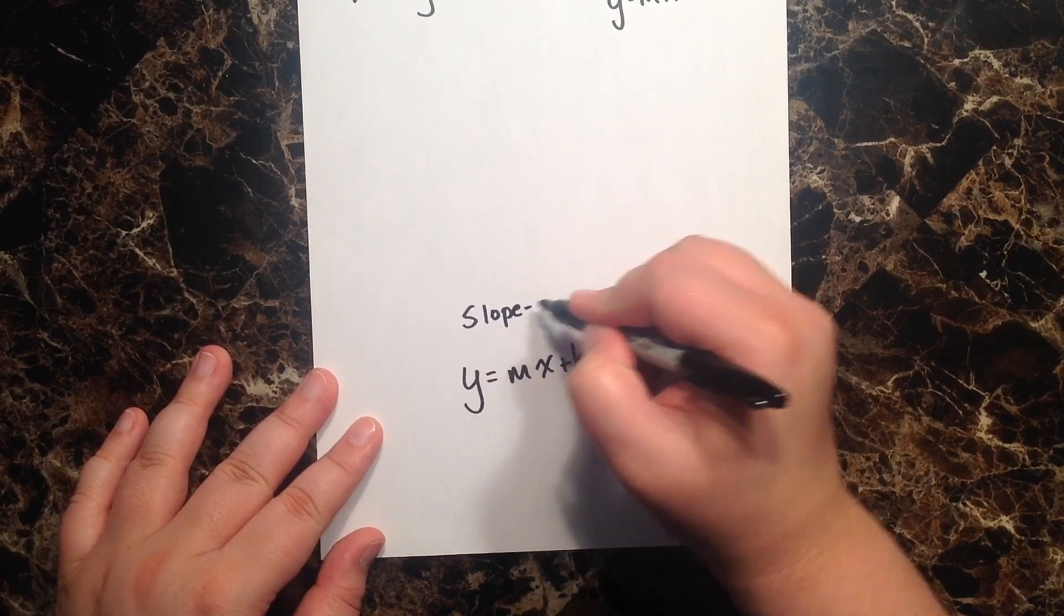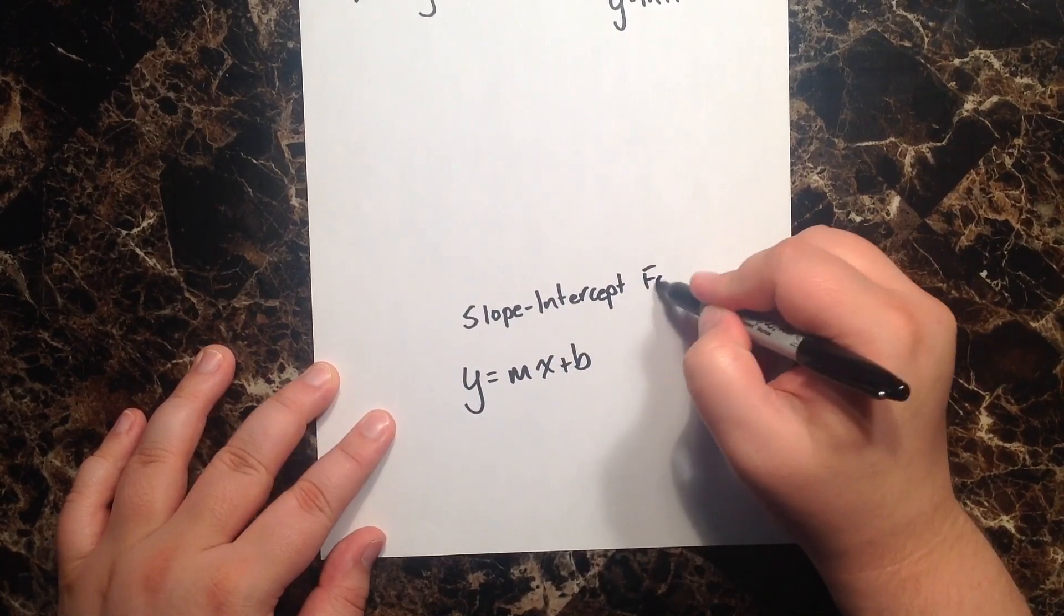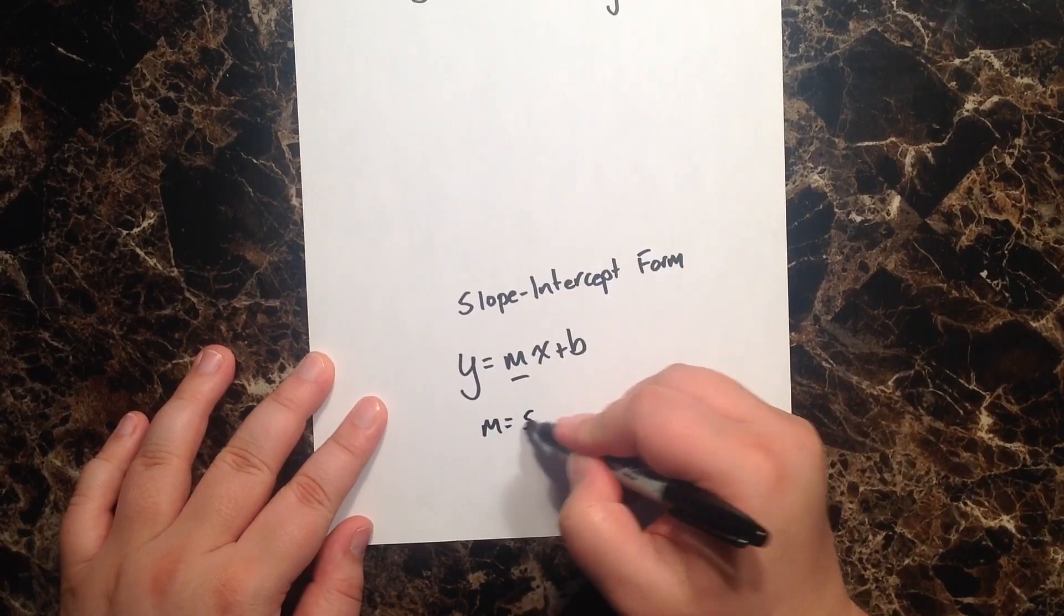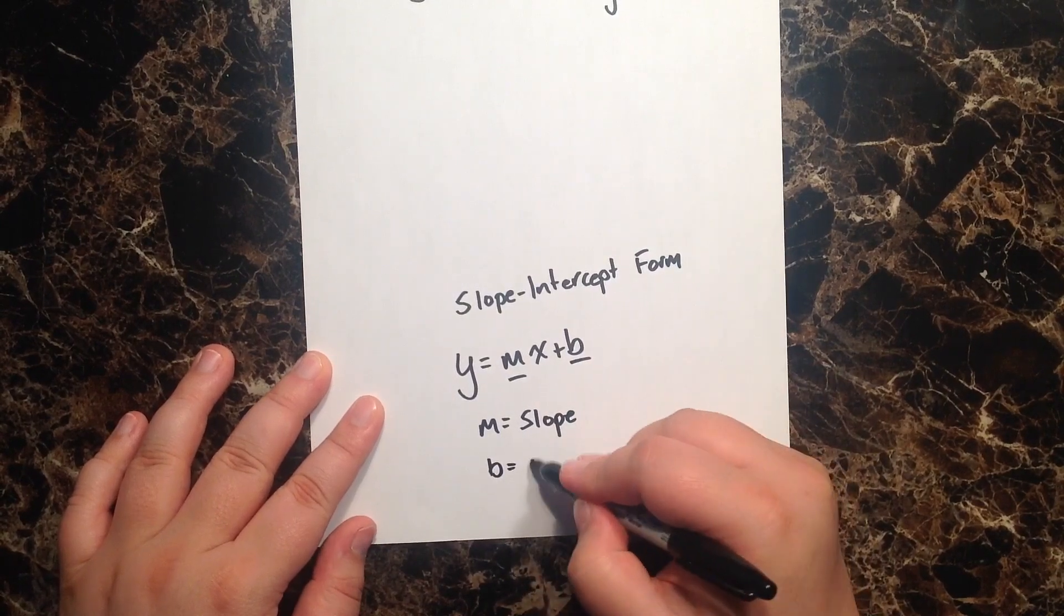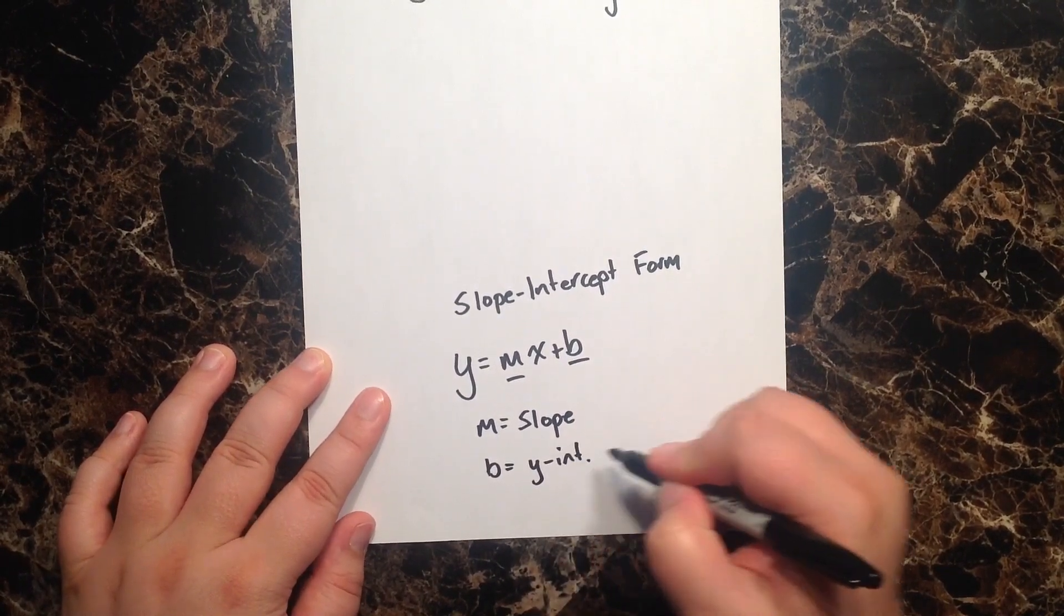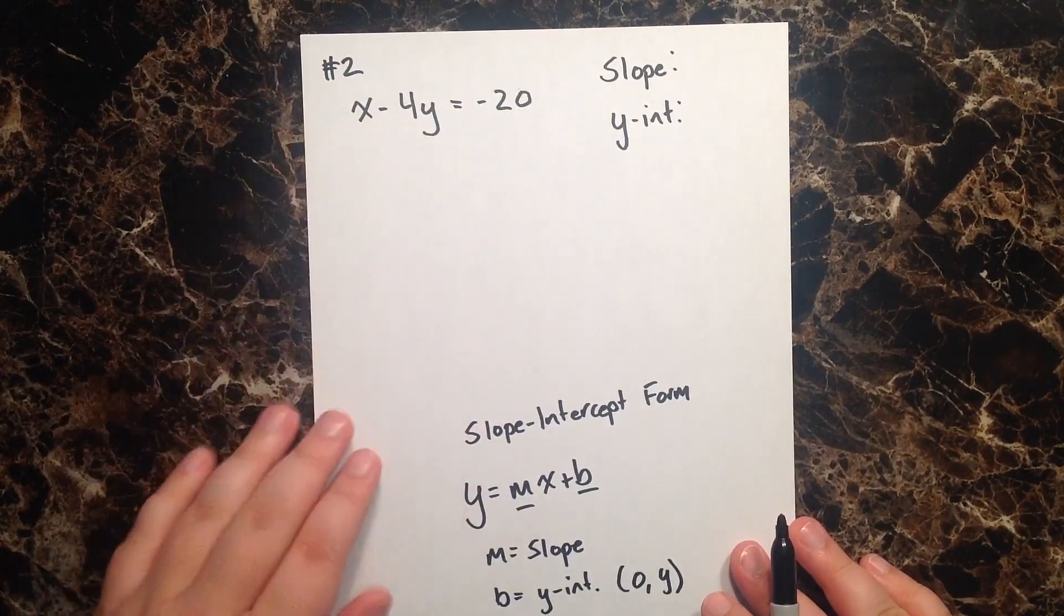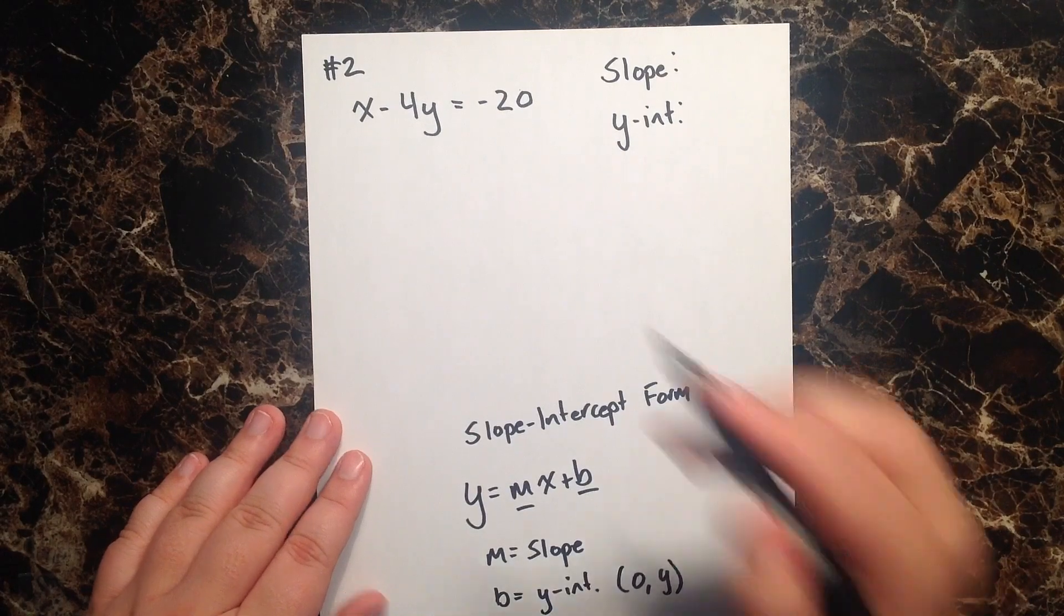is known as the slope-intercept form, where m is my slope and b is my y-intercept. So let's go ahead and solve for y so that we can get it into slope-intercept form.